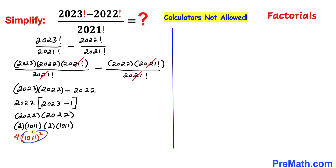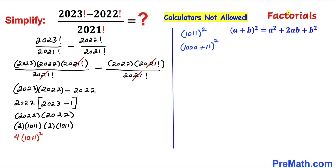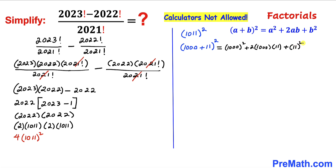Let me show you how to compute 1011 squared without a calculator. We can write 1011 as 1000 plus 11, whole squared. Recalling the identity (a + b)² = a² + 2ab + b², we let a = 1000 and b = 11. So this becomes 1000² plus 2 times 1000 times 11 plus 11 squared.